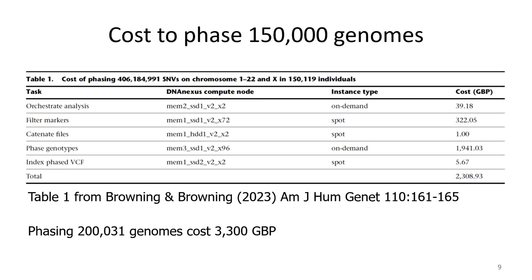Here is a slide from the paper on the first release of 150,000 genomes showing costs. The 150,000-genome run totaled about £2,300. The cost for phasing the 200,000 genomes was about £3,300. The scaling is a little more than linear, but the larger dataset also includes more variants, so you are phasing more variants.